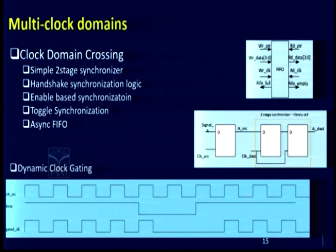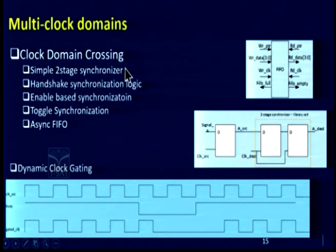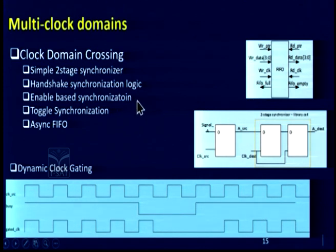When you have multiple clock domains and they come from different sources, they may not be synchronous or edge aligned. When you are taking signals from one domain to another, they can create metastability issues and the system can malfunction. There are various design techniques to handle those issues: a simple two-stage synchronizer, toggle synchronization, handshake synchronization, enable-based synchronization, or an asynchronous FIFO when you are exchanging bulk of data across two domains.